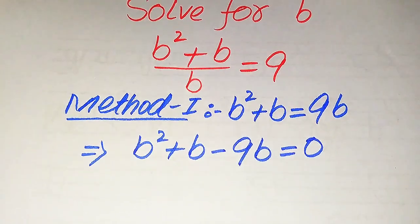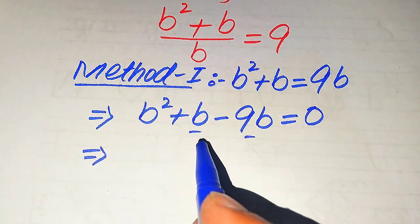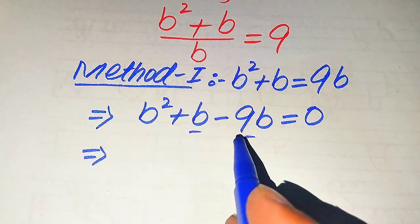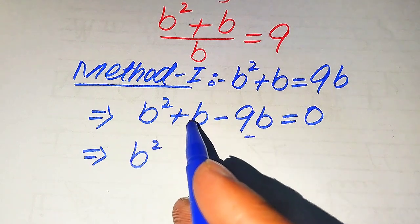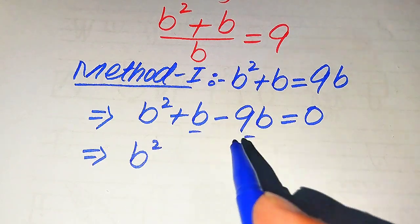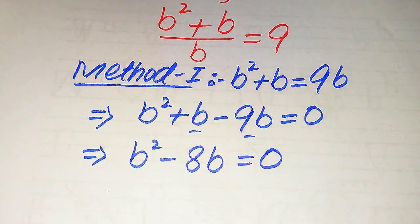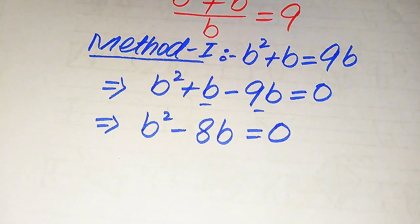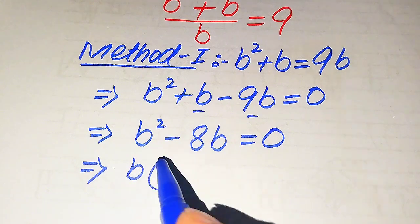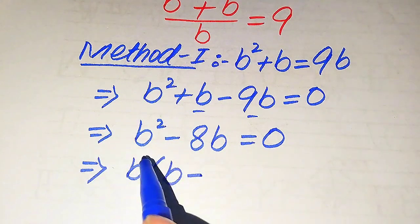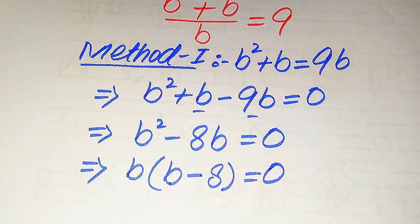We need to add or subtract the like terms. The terms b and 9b are like terms, so we subtract their coefficients. When we subtract the coefficient of b from 9b, it becomes minus 8b, giving us b squared minus 8b equals 0. Both terms involve b, so we take b as a common factor, giving us b times (b minus 8) equals 0.